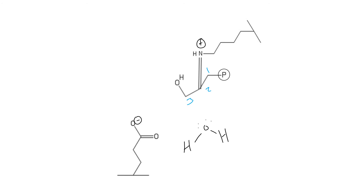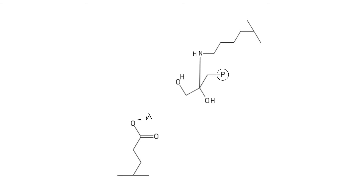Now instead of a water leaving, I'm going to have a water come in. The negative charge from my glutamate is going to come in and grab a proton off of that water. Then electrons from here are going to go up onto that oxygen, making it negatively charged—a really hot nucleophile—and it's going to attack this partially positively charged carbon from my Schiff base. The electrons from that double bond are going to push up onto that nitrogen. And I'm almost done; I just have to kick this off of my lysine and off of my enzyme.